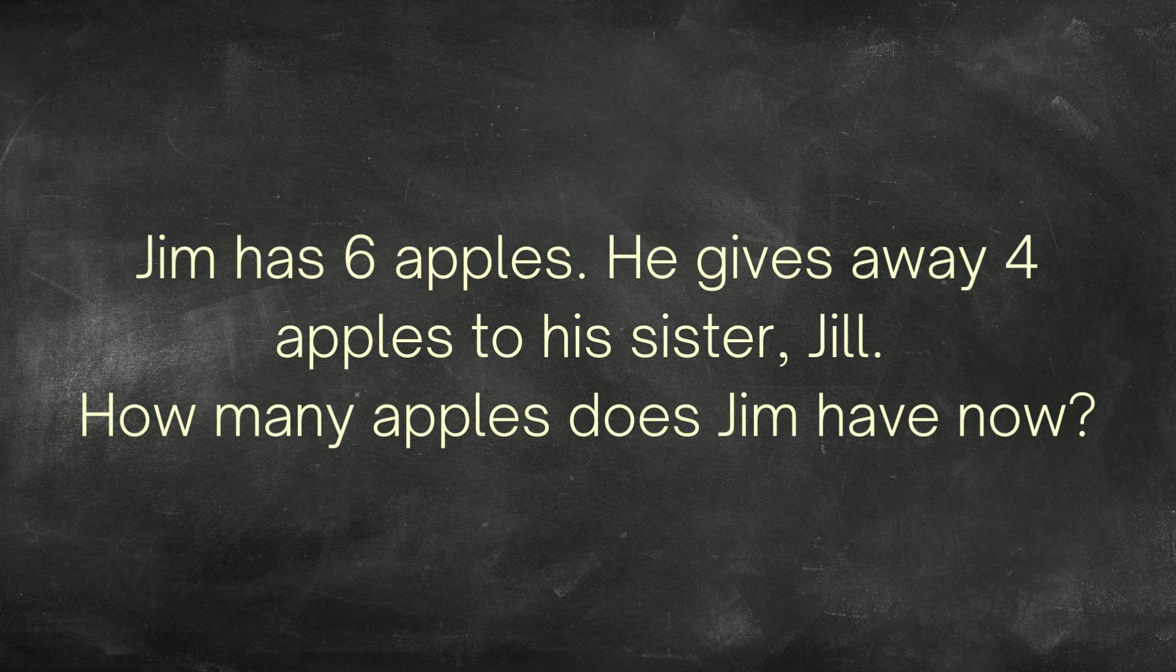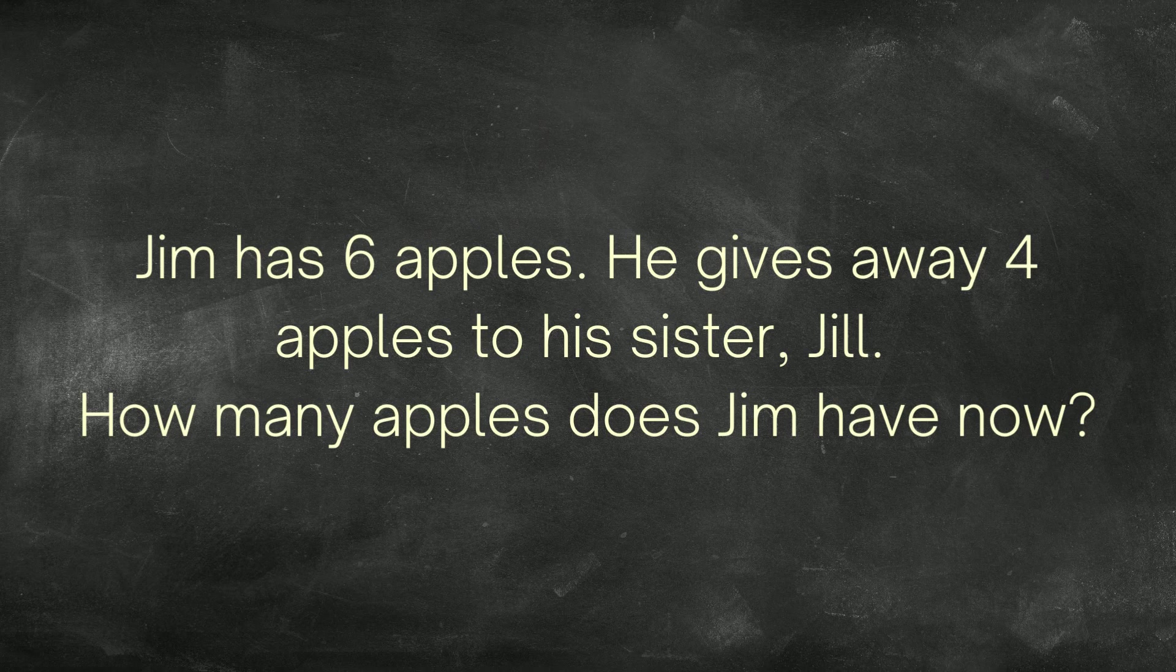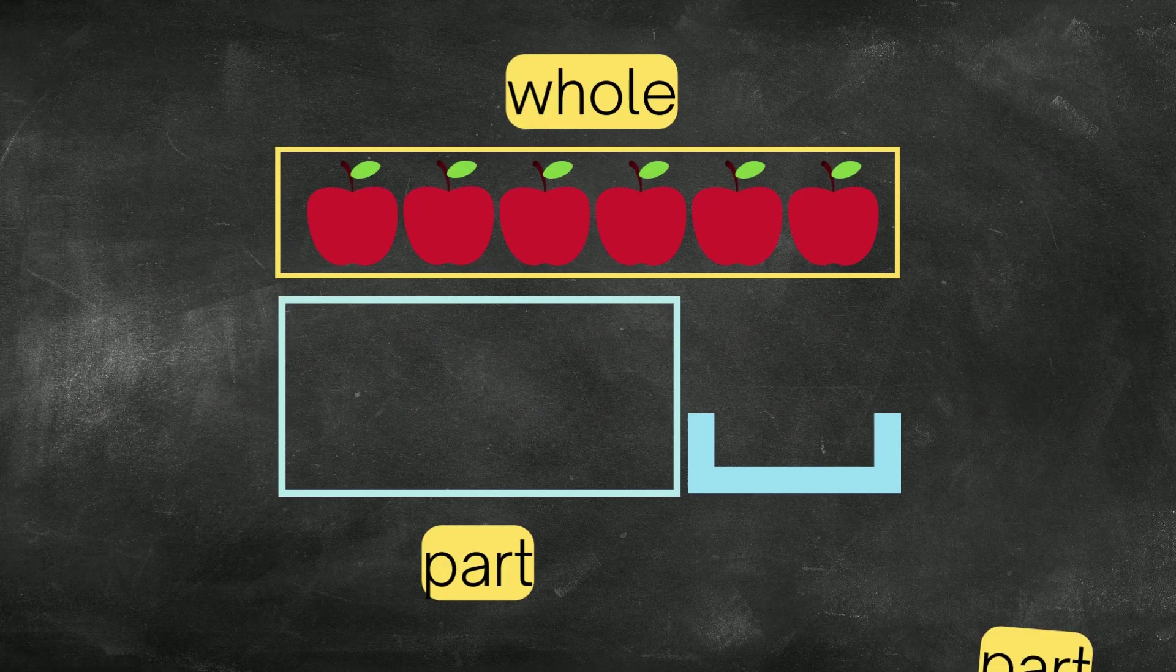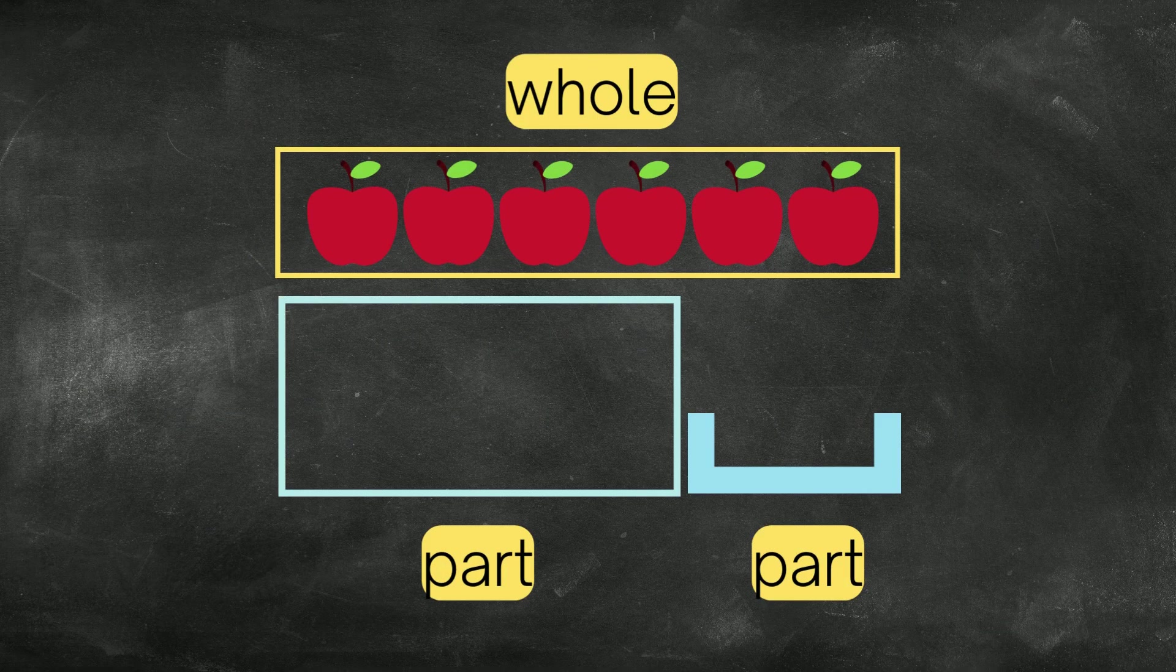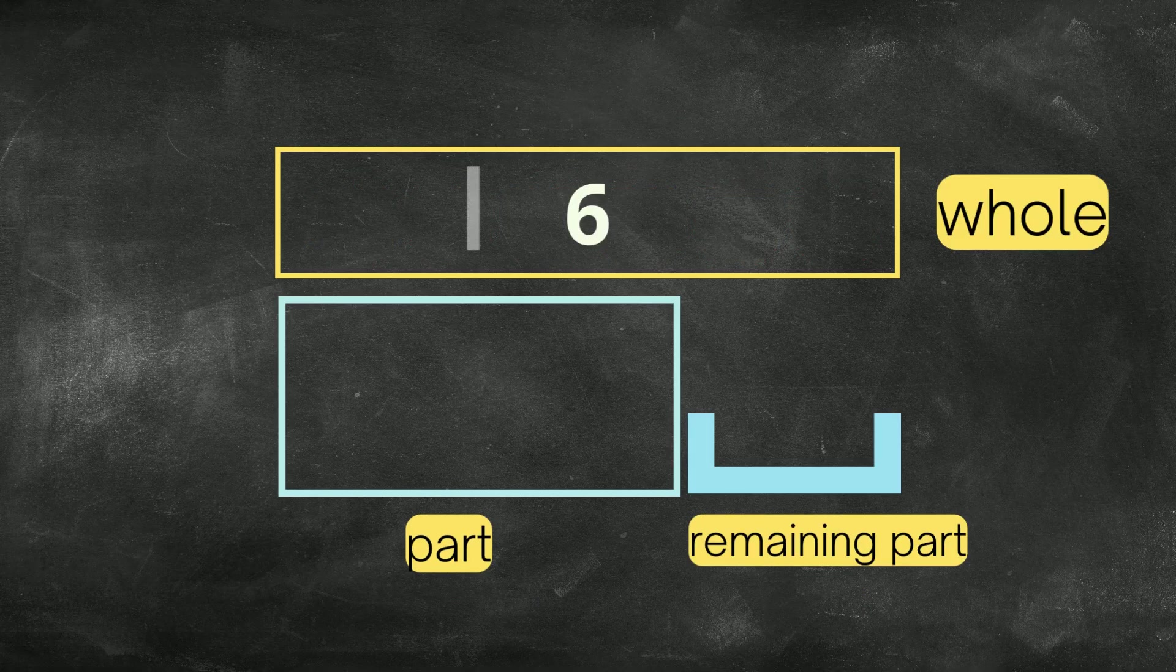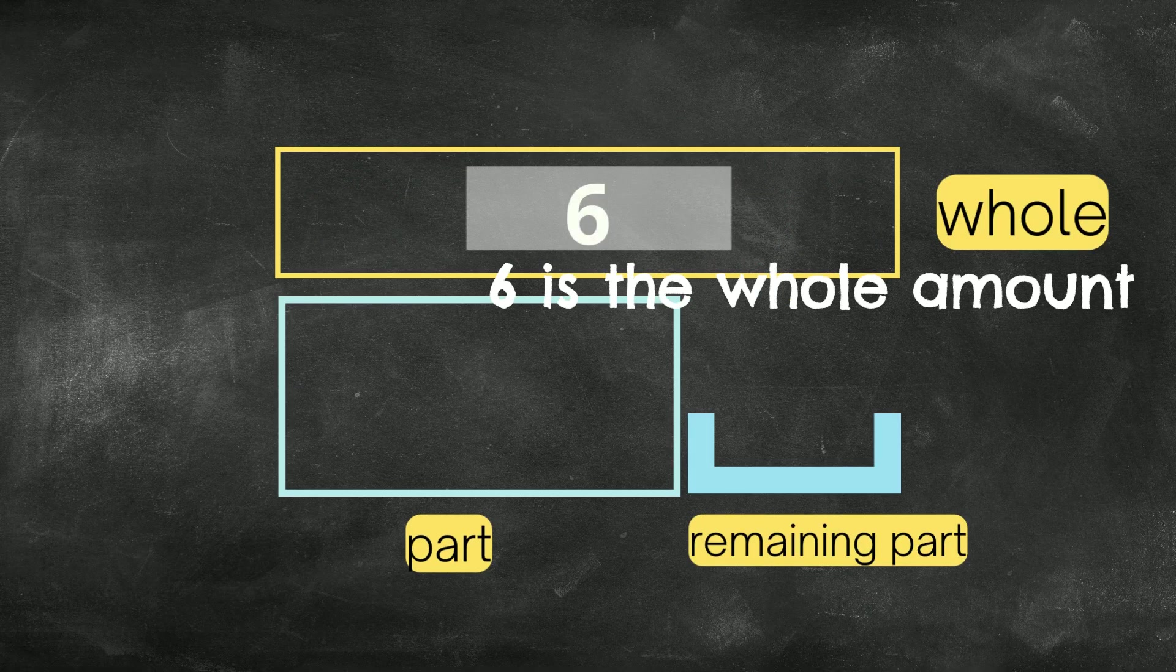So the first thing that I know here is that Jim has 6 apples. Jim has 6 apples. So that's the whole. So if I am using a bar model, I am going to put the number 6 inside the bigger bar.